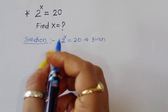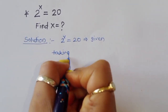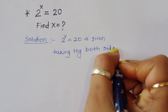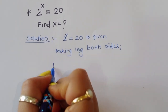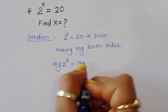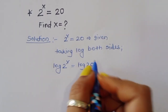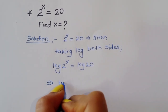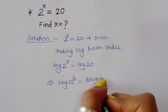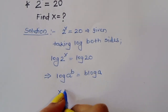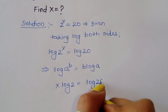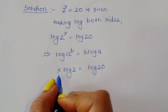We can take log on both sides. Taking log both sides, we will get log of 2 power x is equal to log of 20. Now using the formula: log of a power b is equal to b times log of a. Using this formula, we get x times log 2 is equal to log 20.